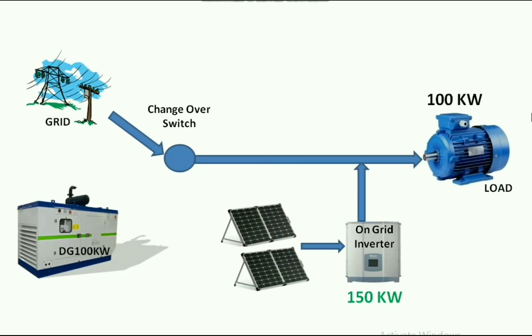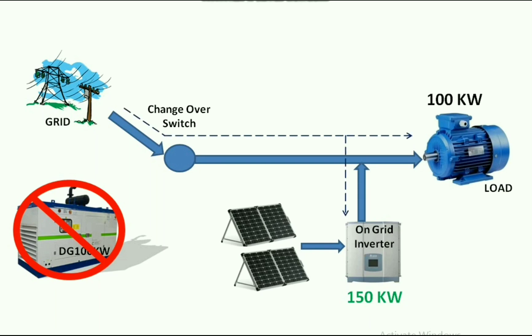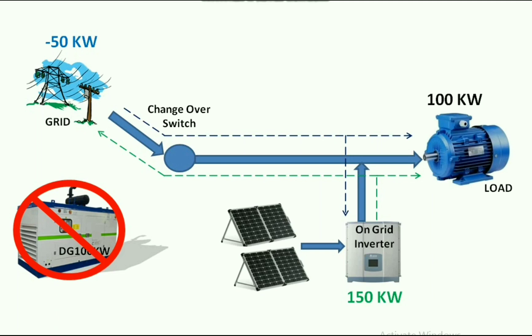For better understanding, we will increase the solar capacity to 150 kW for the above case. Similar to the previous case, when the load is getting supply from the grid, the DG will be in off condition. Initially the overall 100 kW load is supplied by the grid. But when the on-grid inverter gets supply, it starts generating 150 kW from solar. Of that, 100 kW supplies the load and the excess 50 kW is exported to the grid.